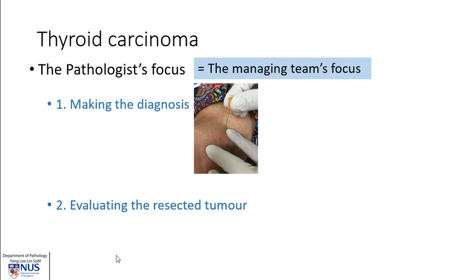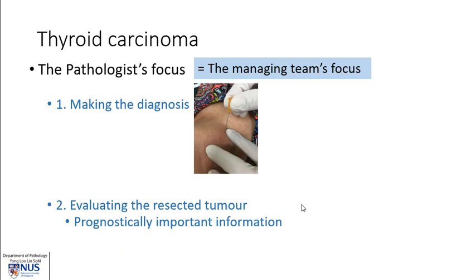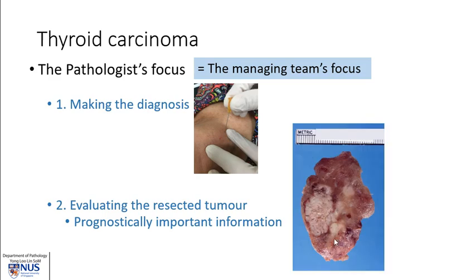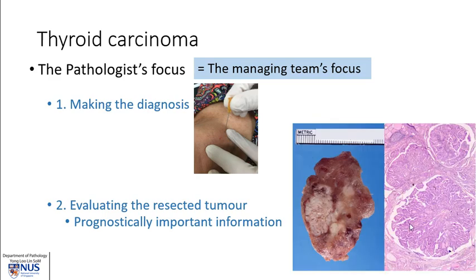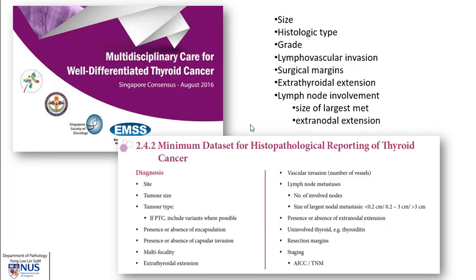The next step is to evaluate the resected tumor. What we need to do is report on all the prognostically important information that we can glean, both from the gross examination of the tumor as well as the microscopic examination. In Singapore, we have formed a multidisciplinary group where we have gone through the important features to look out for in the management of well-differentiated thyroid cancer, and we have put this into a document.